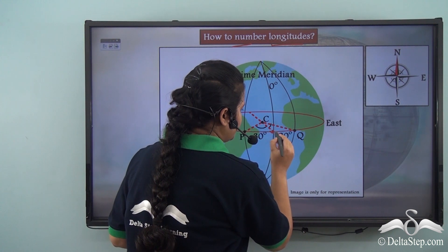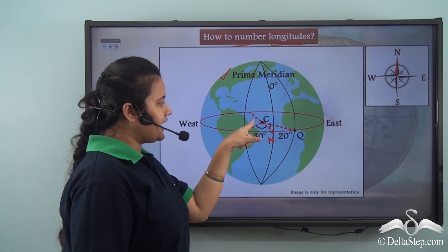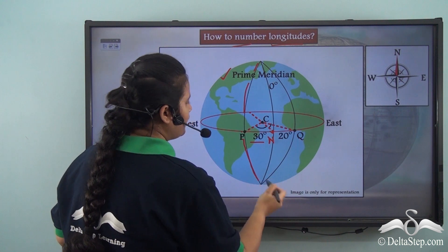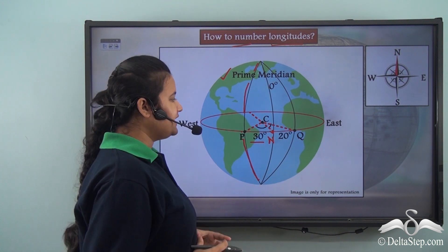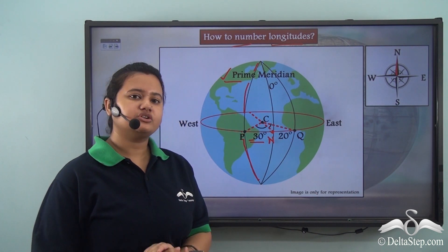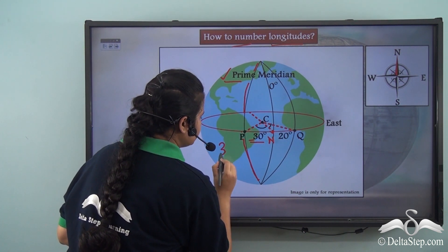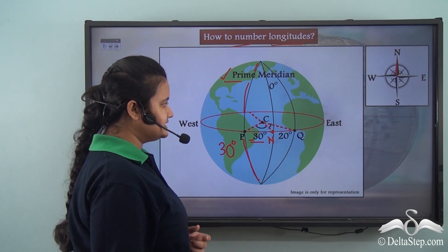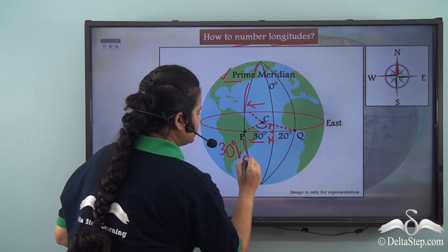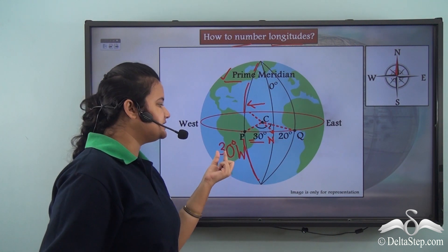If this point is N, the angular distance between CN and CP is 30 degrees. So this longitude, or line passing through point P, makes an angle of 30 degrees with the prime meridian. Since the angular distance is 30 degrees, we shall number it as 30 degrees. And since this longitude lies to the west of the prime meridian, a suffix W is added. So we can demarcate this particular longitude as 30 degrees West.